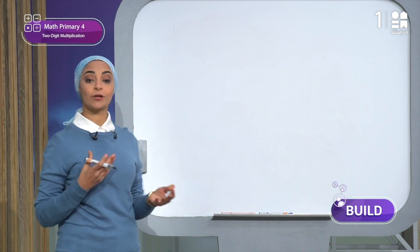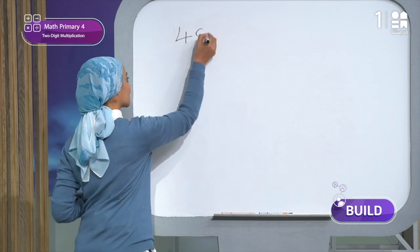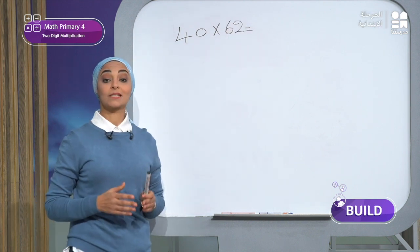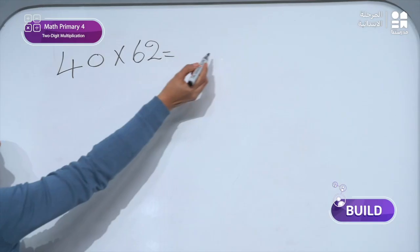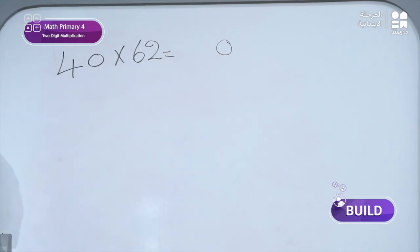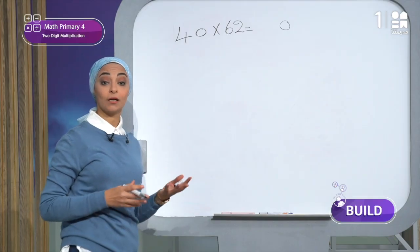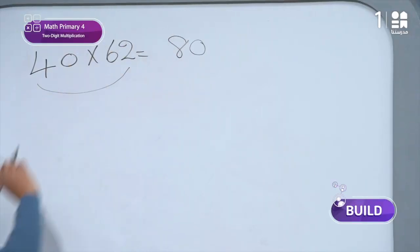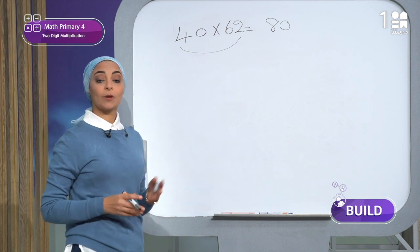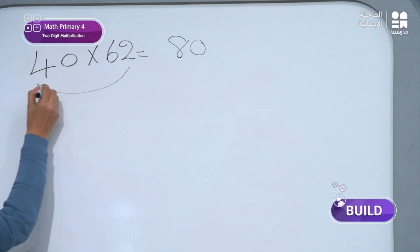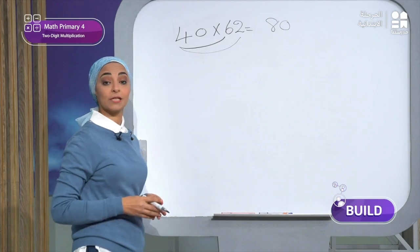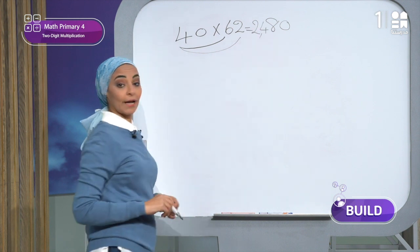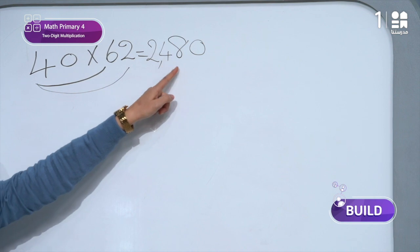In problem number one, I will solve it using the standard algorithm. I want to multiply 40 times 62. First I will write the zero in the ones place. Then 4 times 2 gives me 8. After that, multiply 4 times 6 equals 24. So my answer is 2,480.